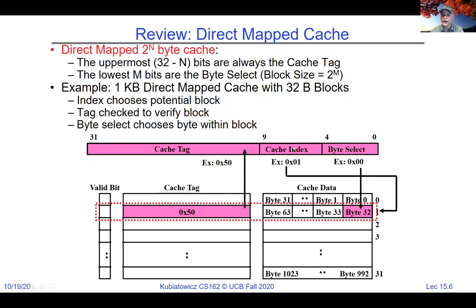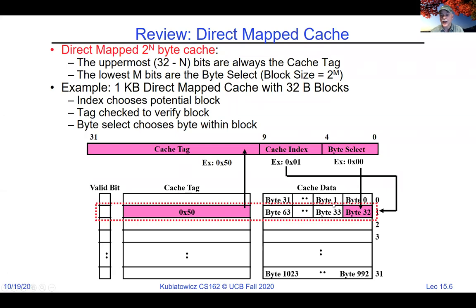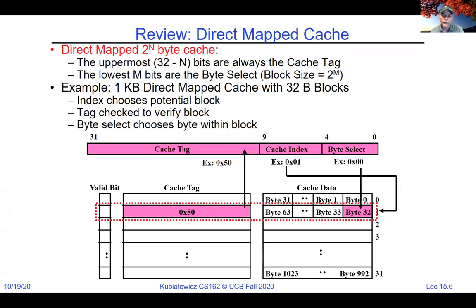It's called a direct-mapped cache because a given index gives you only one possible cache line, and that single cache block has a single tag that is matched. Notice that five bits in the byte select plus five bits in the cache index equals 10 bits total — 2^10 is 1,024, which is one kilobyte. So our cache total is 1,024 bytes, because there are 10 bits selecting it.